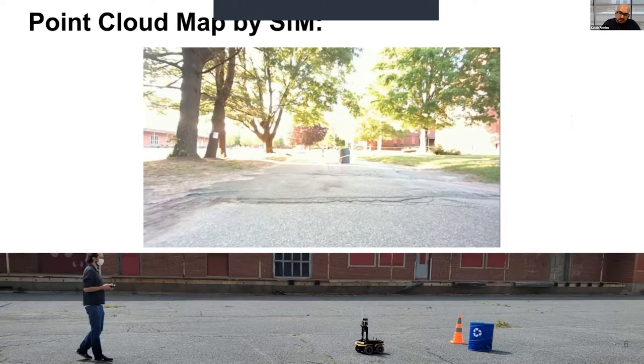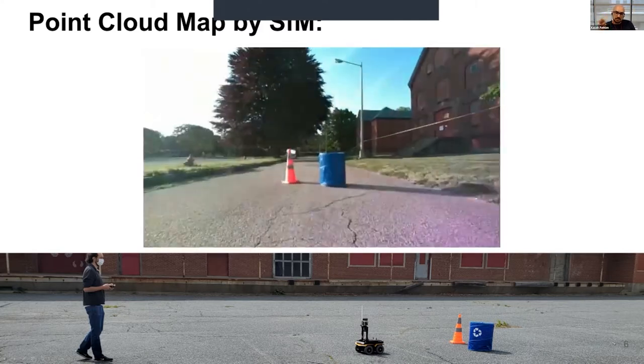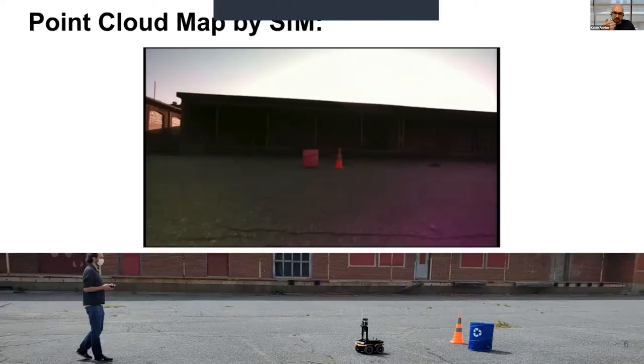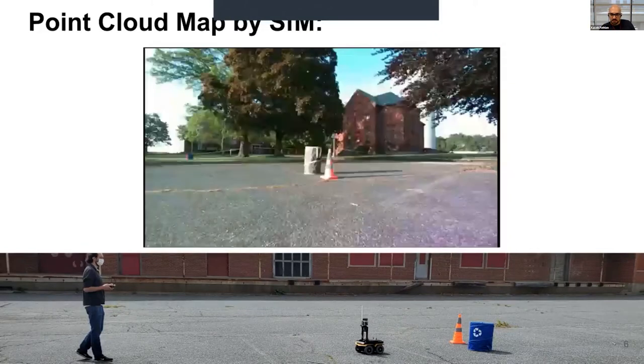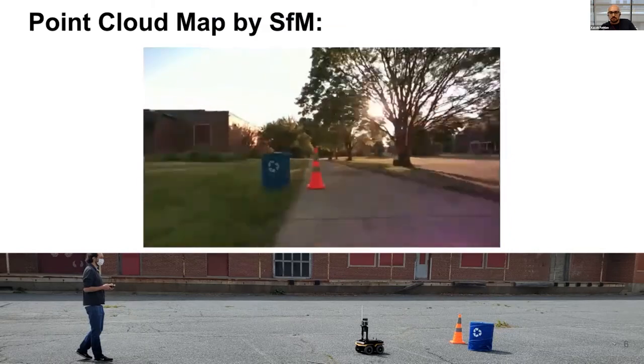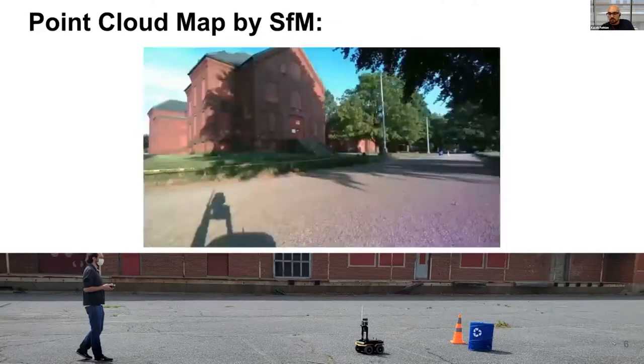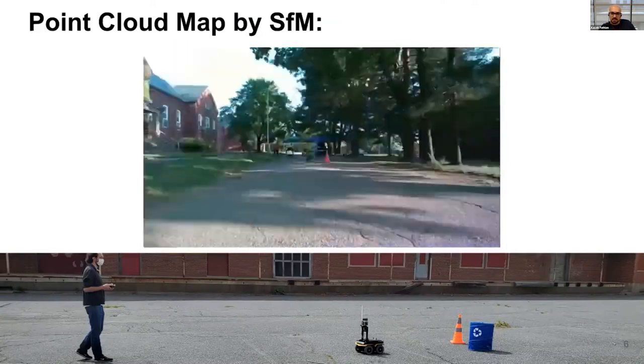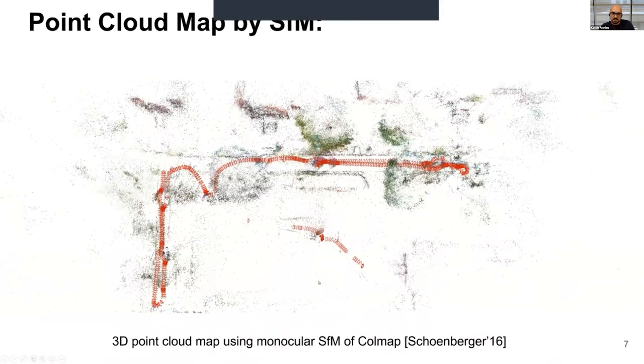To ground this a little bit more and really motivate the problem, we are recently doing these experiments that we have, as you can see here, this jackal robot in the bottom. This video that you see here is the camera on top of the jackal moving in the environment. These are the key frames that we extracted from the jackal as it's moving in this parking area. What we did is that we took this set of images and we reconstructed a 3D model of the environment as a point cloud using the technique that in computer vision is called structure from motion.